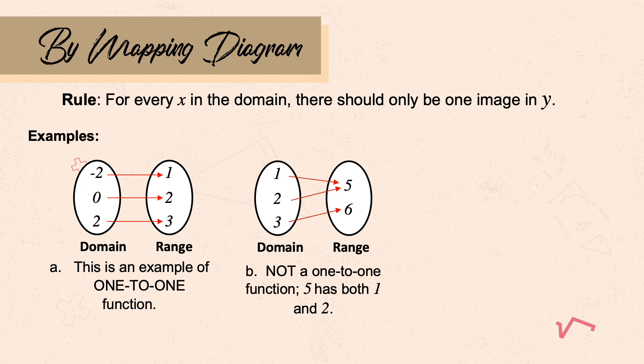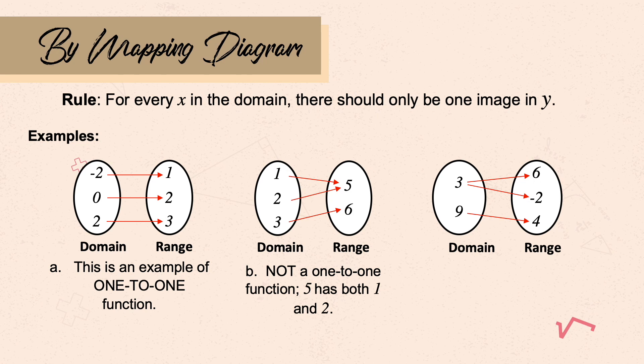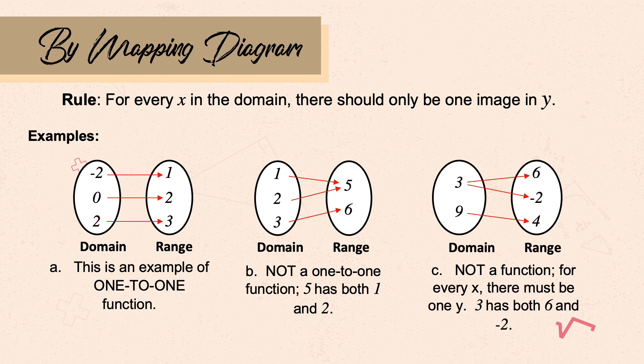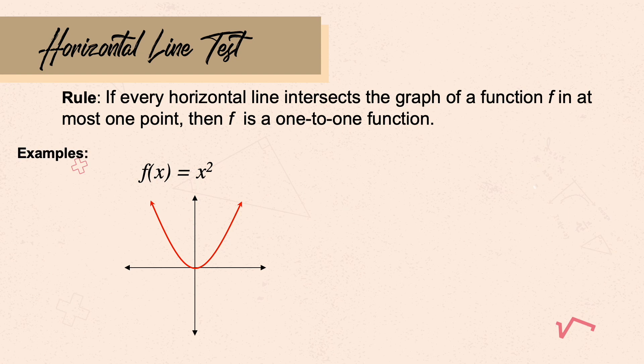The third diagram is not even a function because it violates the definition that for every x there must be only one y. Automatically, if a diagram is not a function, it is also not a one-to-one function.